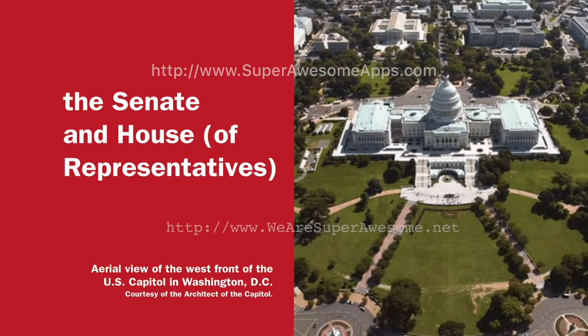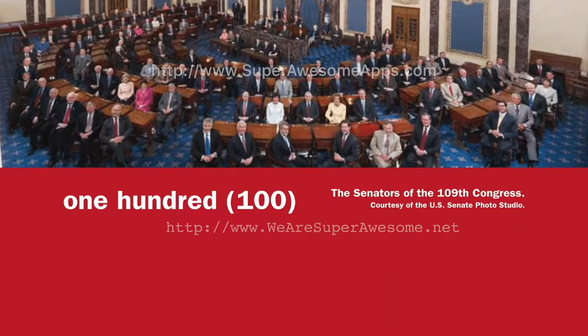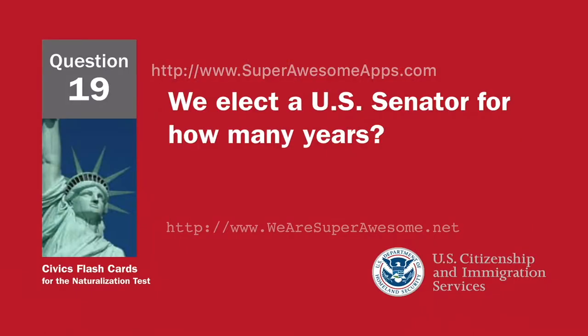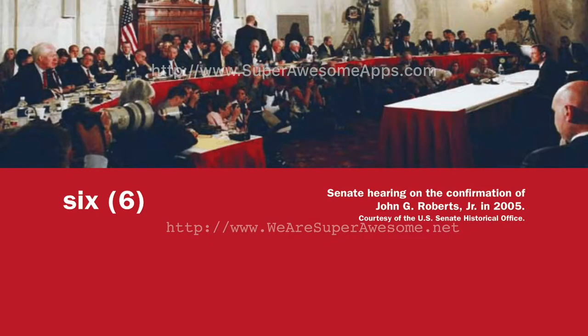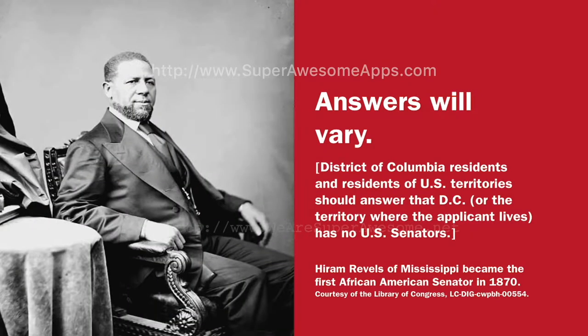The Senate and House of Representatives. How many U.S. Senators are there? 100. We elect a U.S. Senator for how many years? Six. Who is one of your state's U.S. Senators now? Answers will vary.